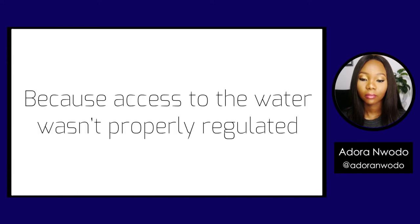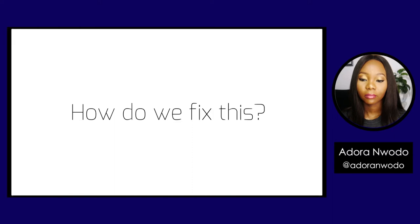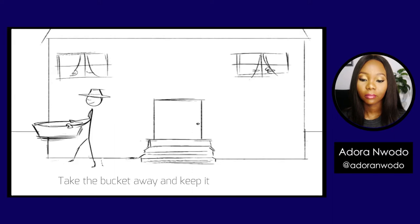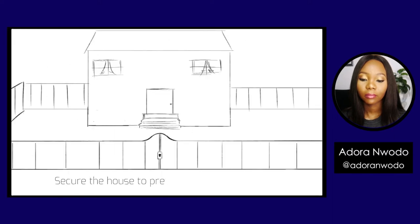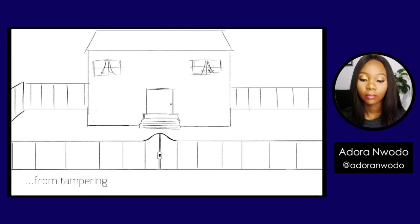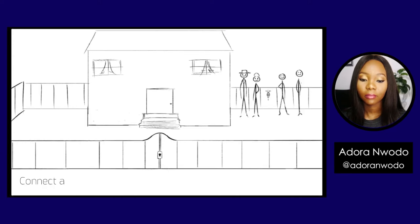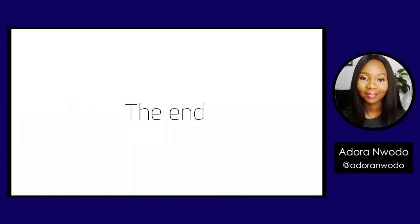Why did this happen? Because access to the water wasn't properly regulated. How do we fix this? Take the bucket away and keep it in a safe place. Secure the house to prevent outsiders from tampering with resources only meant for housemates. Connect a tap so housemates get water in a structured way.